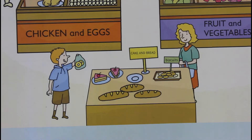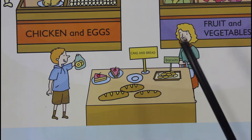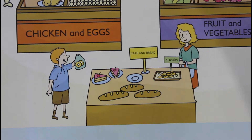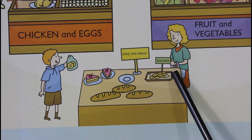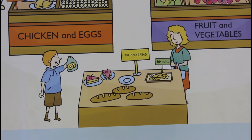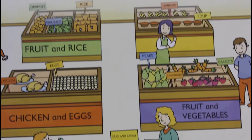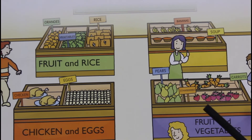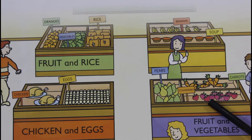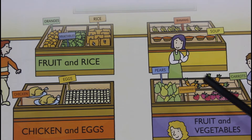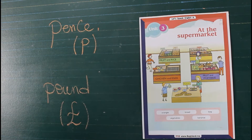Where is bread? It's between biscuits and cake. Bread is between biscuits and cake. Where are pears? They are next to strawberries. Pears are next to strawberries.